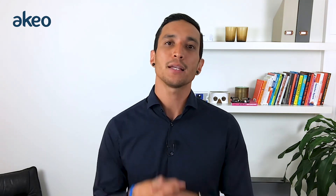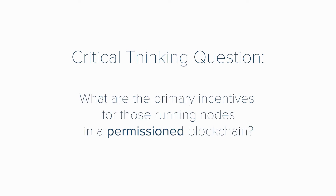Let me know if you agree or disagree, if you have anything to add, or if you have any questions. But before we wrap this up, I want to leave you with a little critical thinking question. Permissionless blockchains like Bitcoin and Ethereum incentivize people for running network nodes — there is no blockchain without nodes. So my question for you is: in a permissioned blockchain, what are the primary incentives for those running nodes?